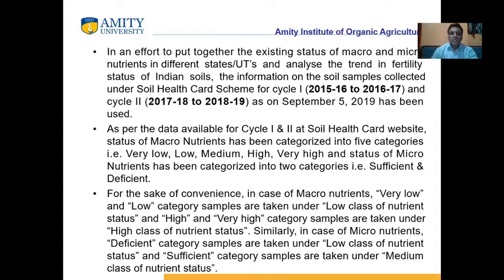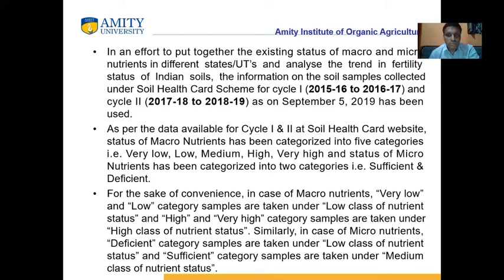An effort was made to prepare a soil health card scheme over two cycles: the first cycle from 2015 to 2017, and the second cycle from 2017 to 2019. In this scheme, soil samples from all states and union territories were examined and labeled with low, medium, or high values of their fertility levels.